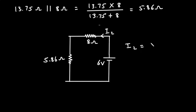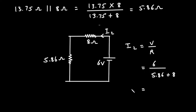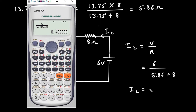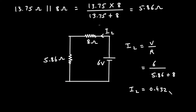Now I2 equals V divided by R. The voltage is 6V, and the resistance is 5.86 + 8Ω. So I2 = 6 divided by 5.86 + 8, which equals 0.432 ampere. This is the value of I2, but we need to find I double prime.